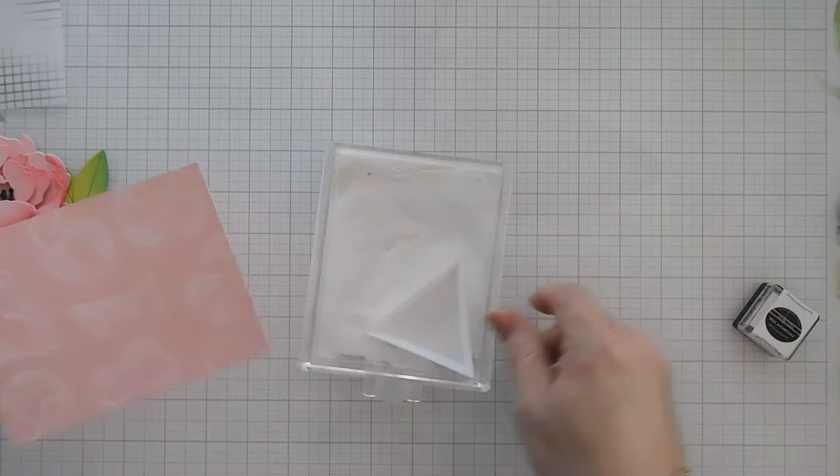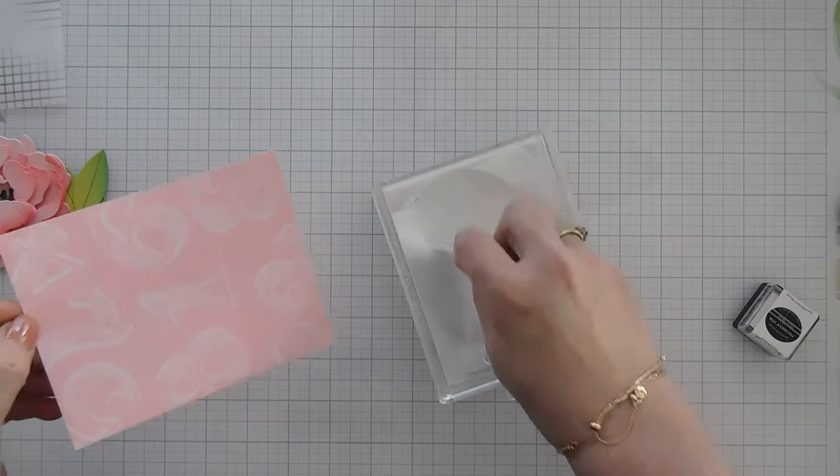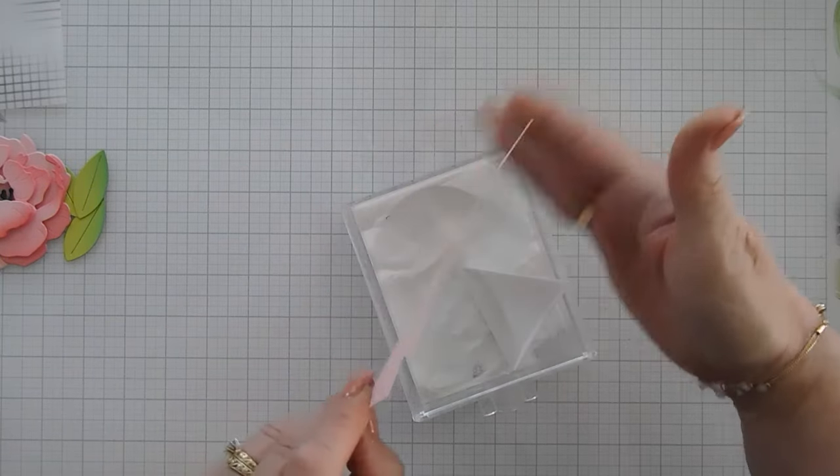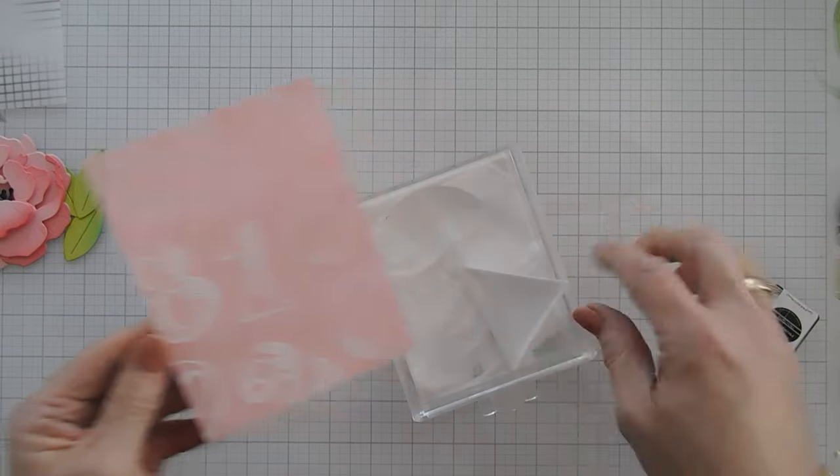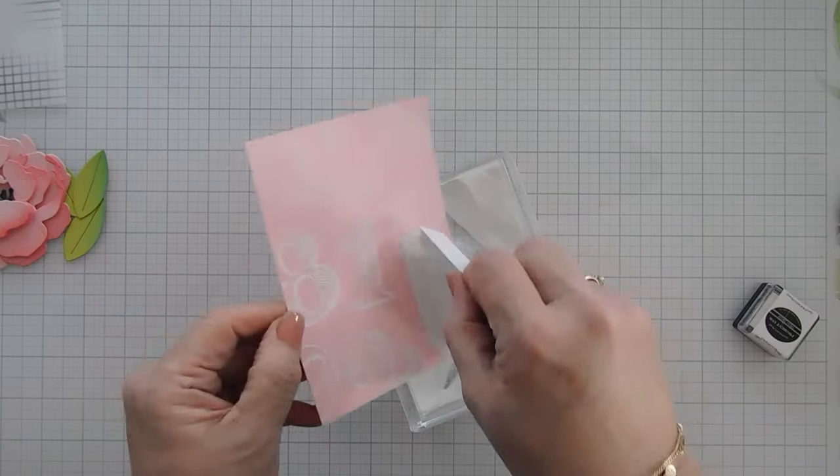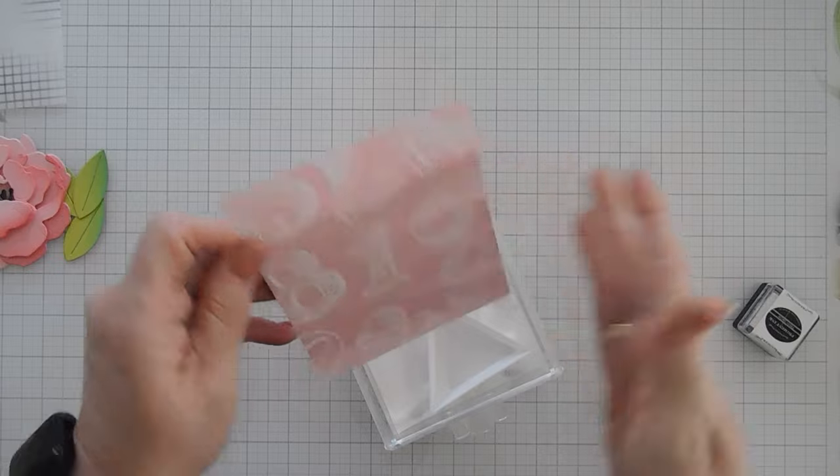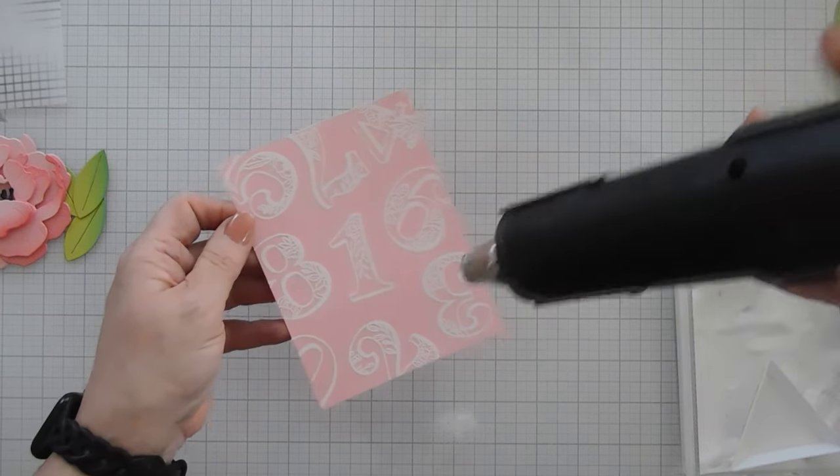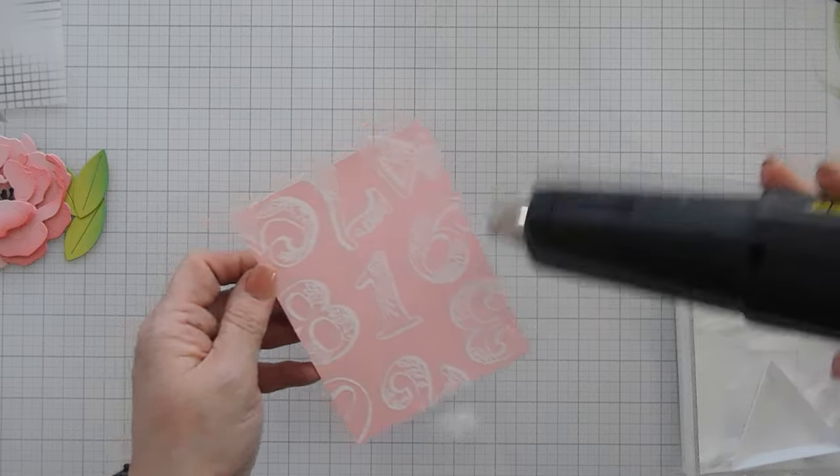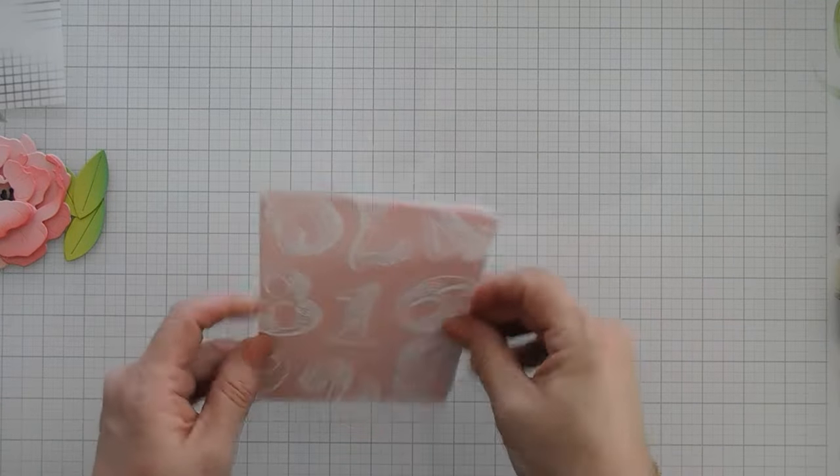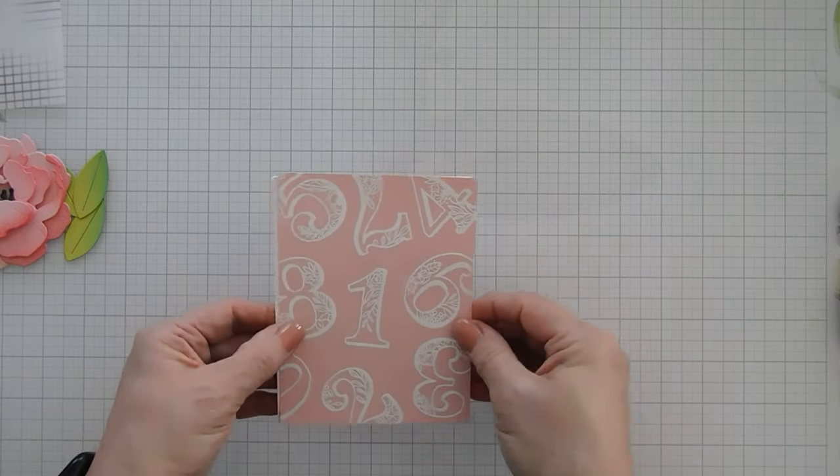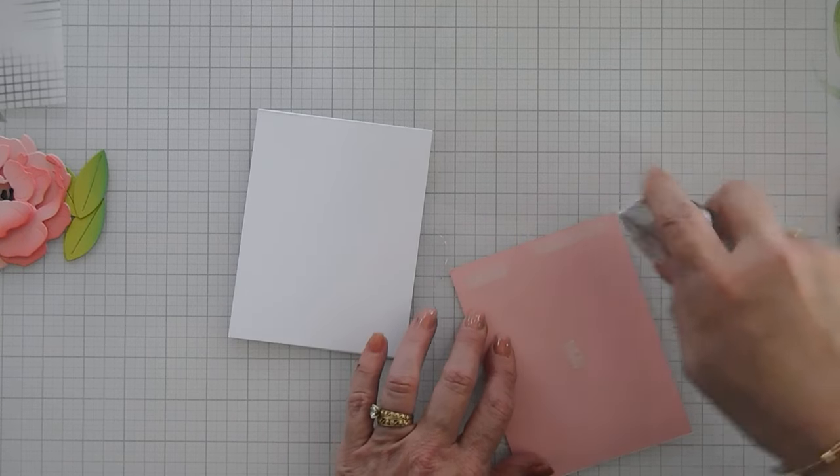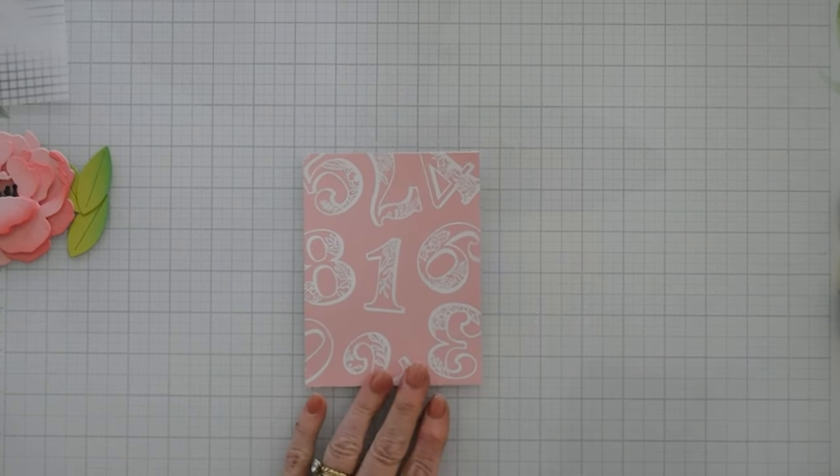I'm going to bring in my white embossing powder, and I'm going to go over our numbers so it stands out on my pink peony cardstock. Okay, I'm going to go ahead and melt this. I'm going to adhere this panel to the front of an A2 size card base, just using my tape runner. That's our background panel.